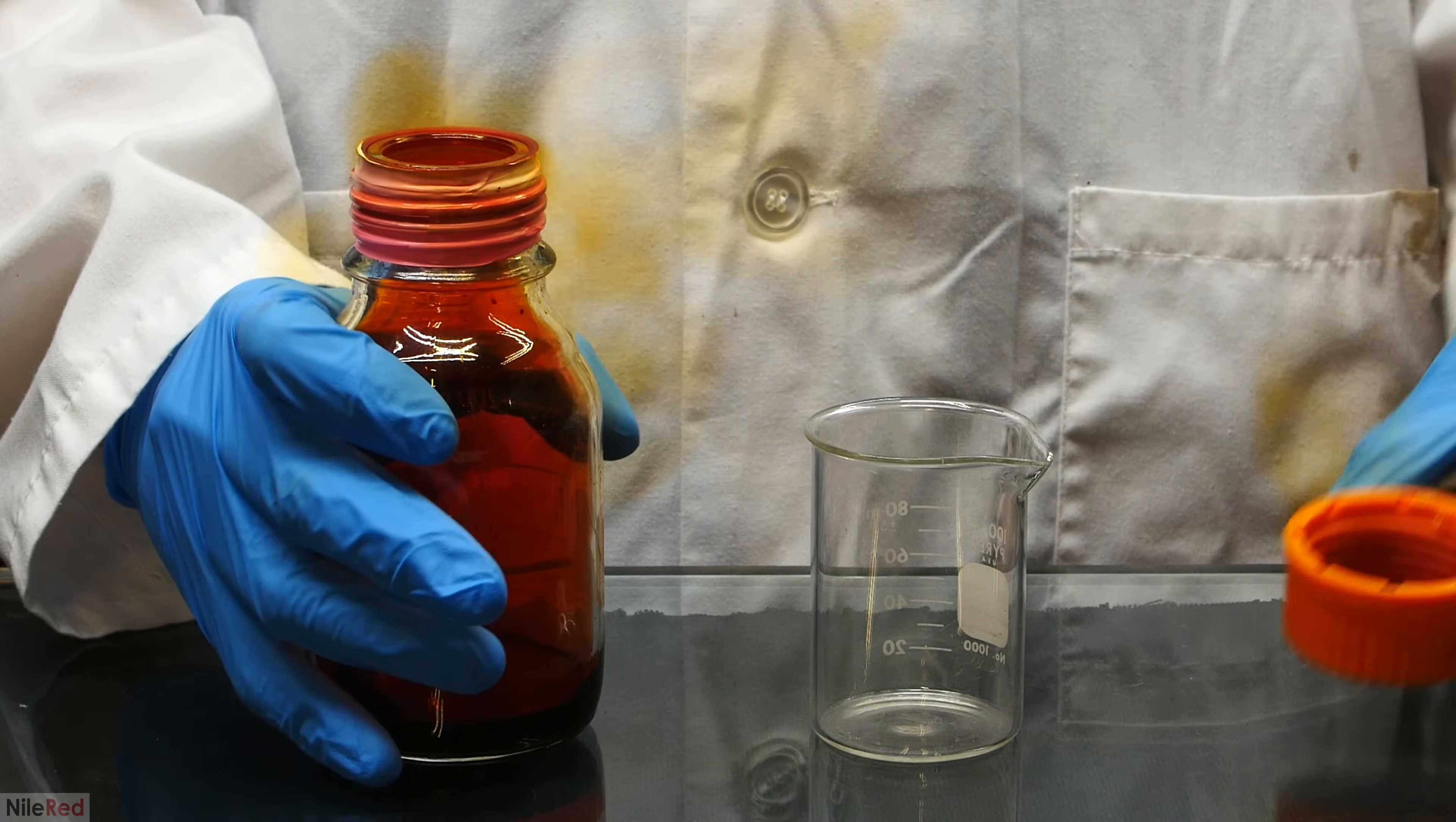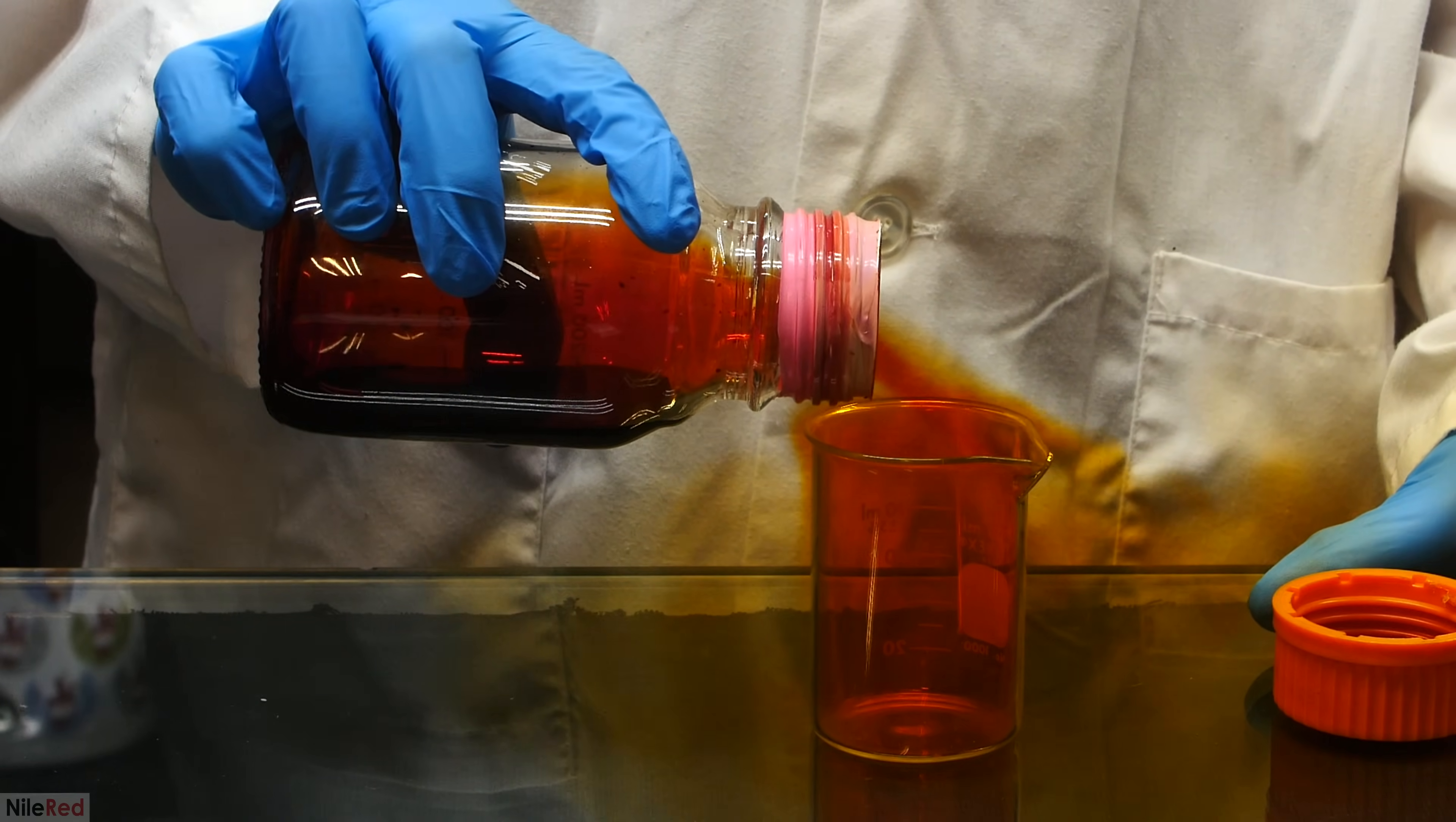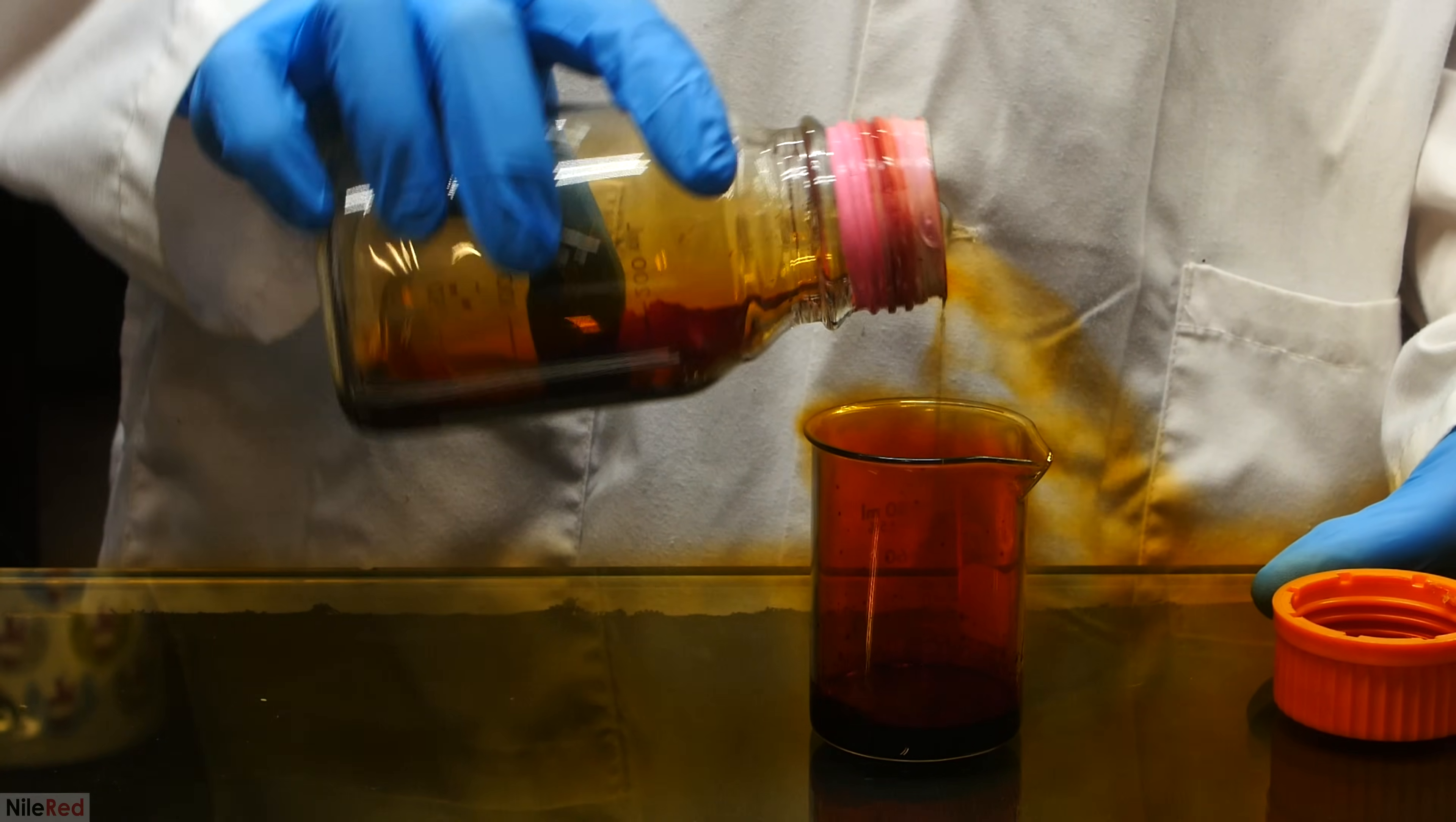When I open the bottle for a second time a lot of fumes are going to come out but this time I'm protected. The bromine vapor is heavier than air so when I tip the bottle you can see it pour into the beaker and all over the table.